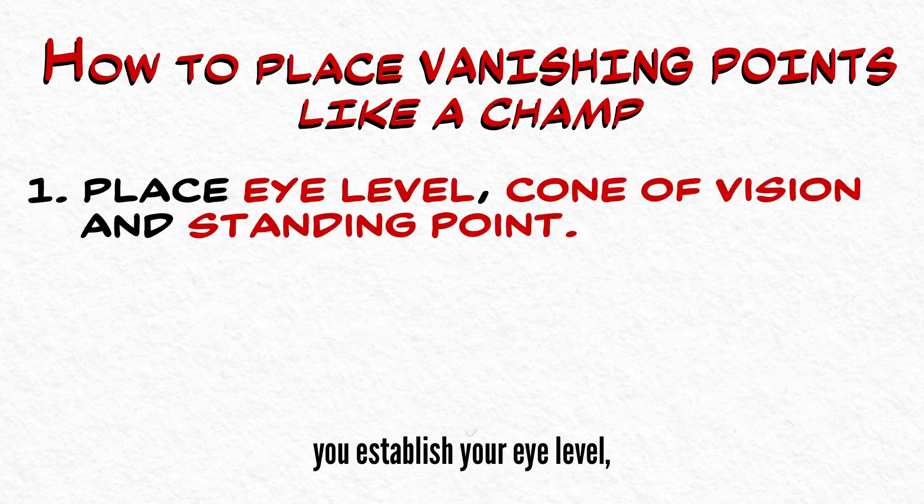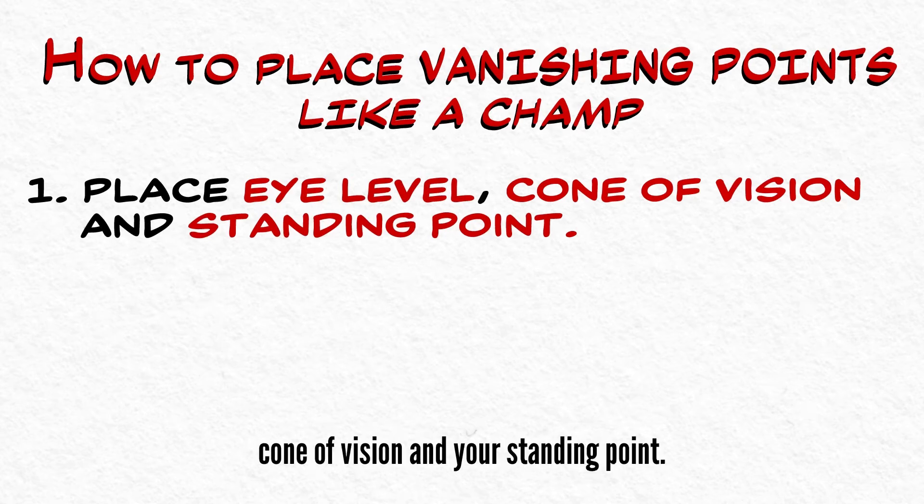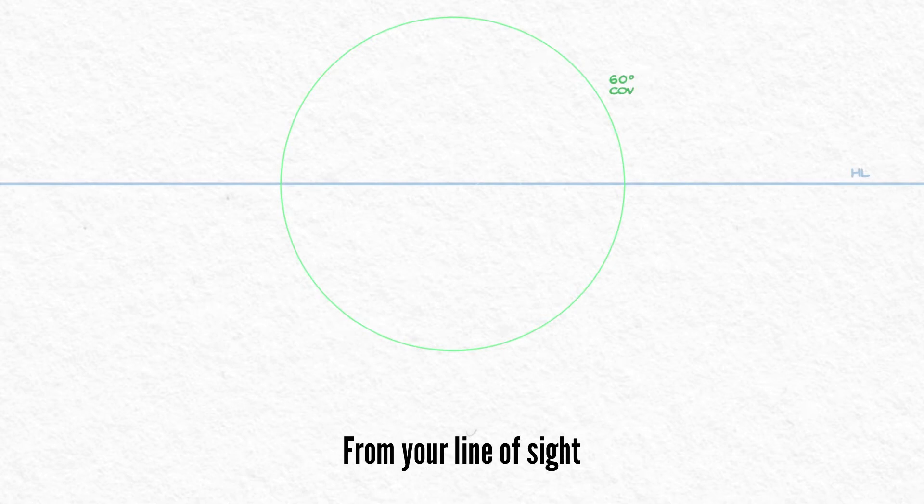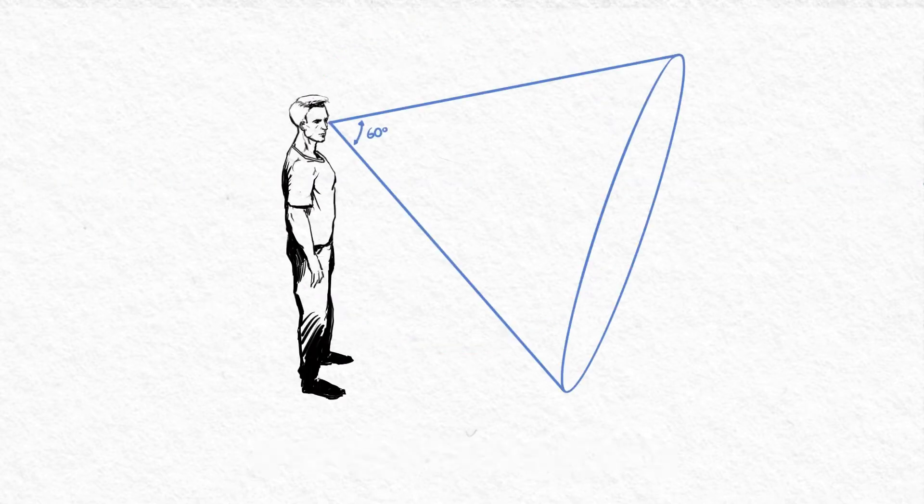First things first, you establish your eye level, cone of vision, and your standing point. The horizon is your eye level. From your line of sight, we limit the field of view to 60 degrees in the shape of a cone, the cone of vision.